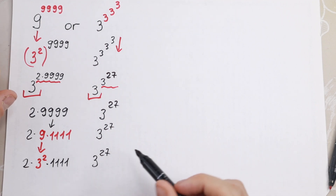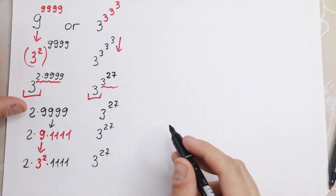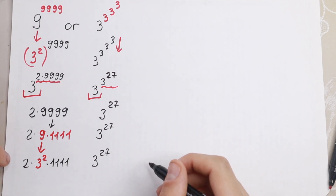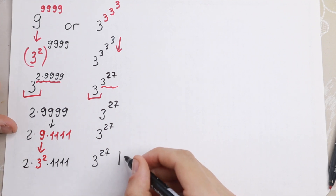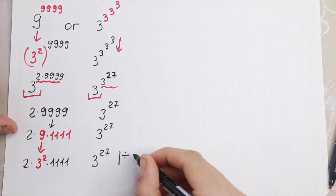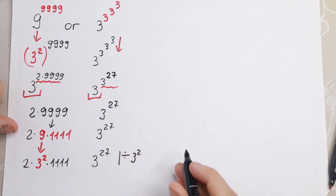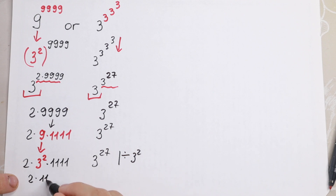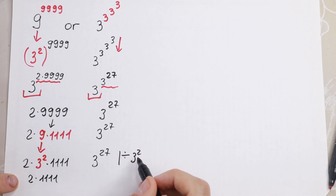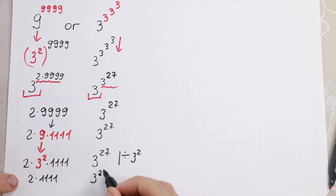So why did I write 9 as 3 squared? Because we are going to divide both sides — left and right — by 3 squared. After dividing, the left becomes 2 times 1111 and the right becomes 3 to the power 25.